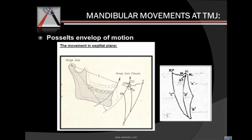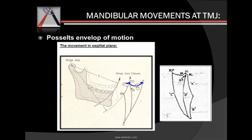The first motion — the first thing will be at centric relationship. Relax your mandible without touching your teeth; that is your centric relation. Then bring your teeth into maximum intercuspation — that is your centric occlusion. Once in centric occlusion, now try to open your teeth slightly and bring it forward in protrusion. When you bring the teeth forward in protrusion, you have to overcome the maxillary incisors. You can't just pull your mandible forward without opening it slightly.